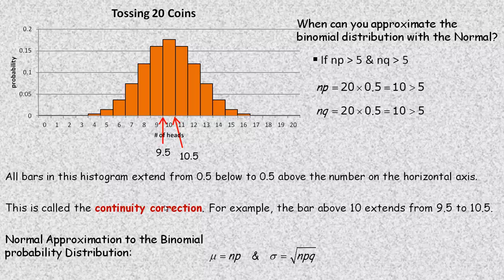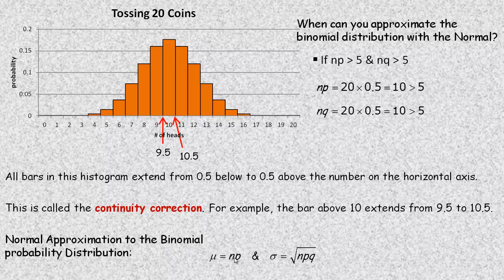We need this continuity correction because we're approximating a discrete random variable that can only have whole-number values with a continuous one that can have any decimal value. Normally you can't have 9.5 heads or 10.5 heads, but this is how you do the approximation with the normal. For the binomial, the mean is np (the expected value), and the standard deviation is the square root of npq.